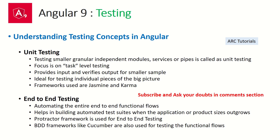You provide an input to that unit spec and the output will be a smaller sample of it. This is ideal for testing individual pieces of the big picture. The frameworks used are Jasmine and Karma. The other type of testing is end-to-end testing, where we automate the entire end-to-end functional flow — right from login, going into the application, performing some activity, getting some output, and then logging off. This entire chain or workflow is what end-to-end testing covers.